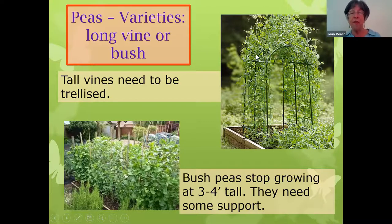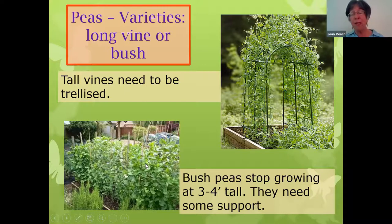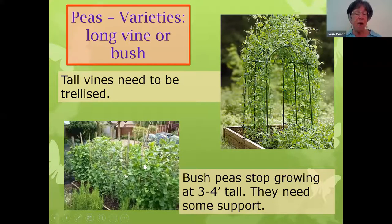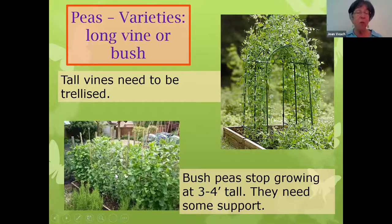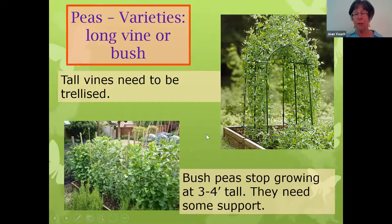Tall vine peas grow five to six feet tall; bush peas grow three to four feet tall. Your seed packet will usually say bush peas don't need to be trellised, but at least in our climate they need some sort of support, because they will just flop over on the ground. With a heavy rain, the peas are down in the mud and the slugs come along and eat them. So they do need some sort of support.